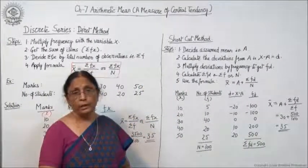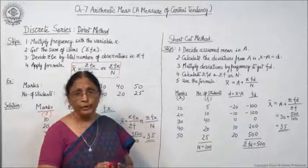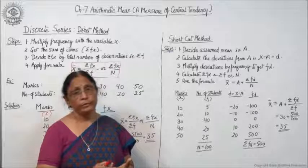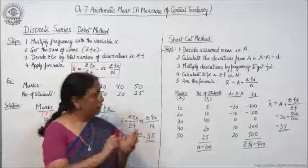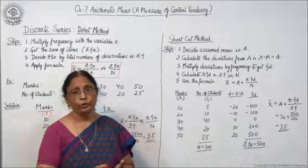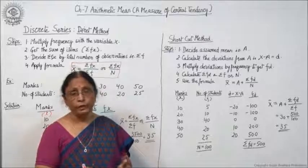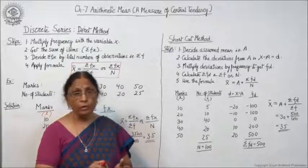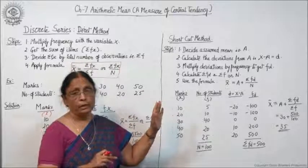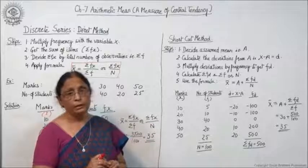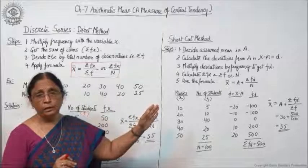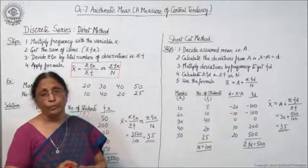As I told you earlier, there are three methods: direct method, shortcut method, and step deviation method. Any of these three methods you can apply. Here, for convenience, I have taken the same example to show you that whichever method you apply, the answer will always be the same. If the answer is coming wrong, that means there is some error. The only difference is one is a little easier, and another is a slightly extended form, though it is not difficult.